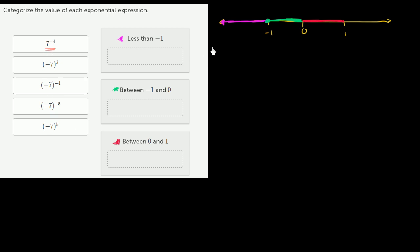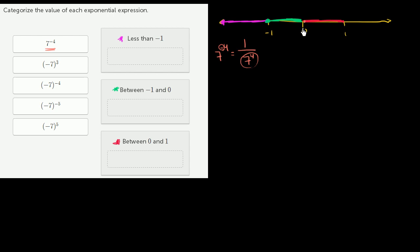The first expression is 7 to the negative 4th power. When you raise something to a negative exponent, this isn't negative 7 to the 4th power. When you see a negative number in an exponent, you should immediately think reciprocal. So this equals 1 over 7 to the positive 4th power. You don't even have to know that 7 to the 4th is 2,401. You just know it's a large positive number, so 1 over that is a very small positive number — between 0 and 1.